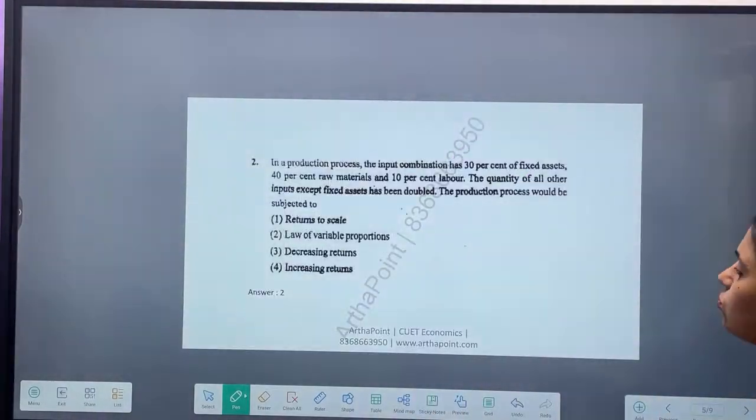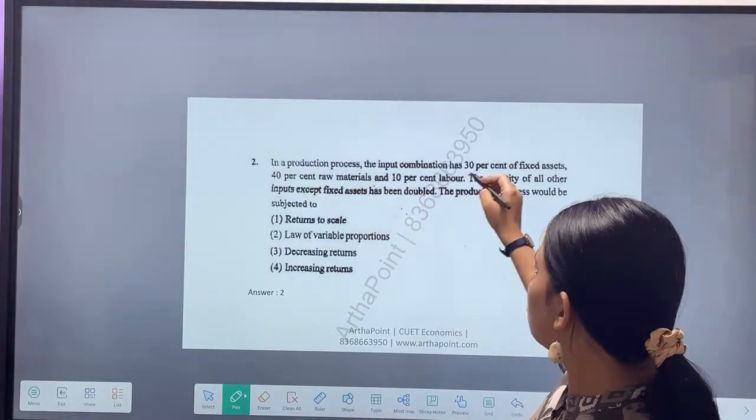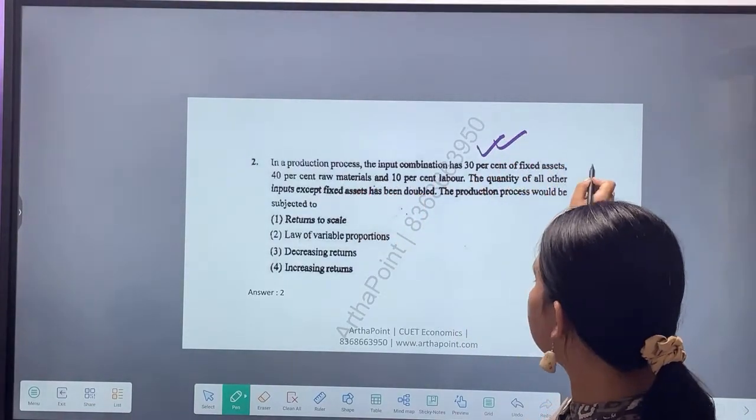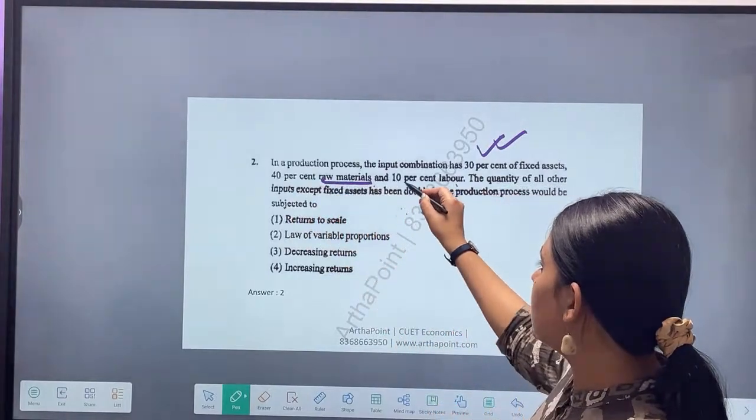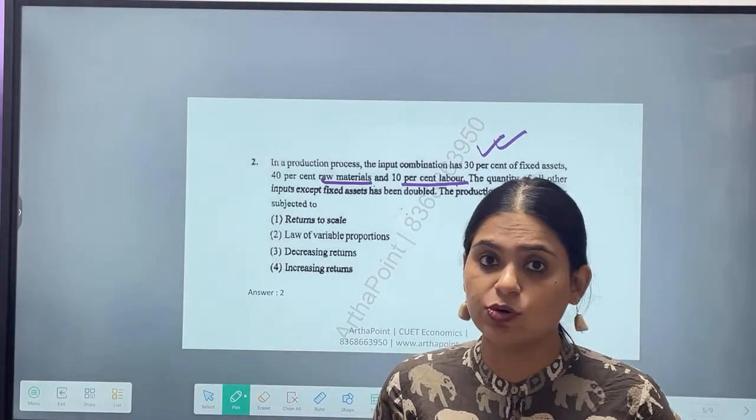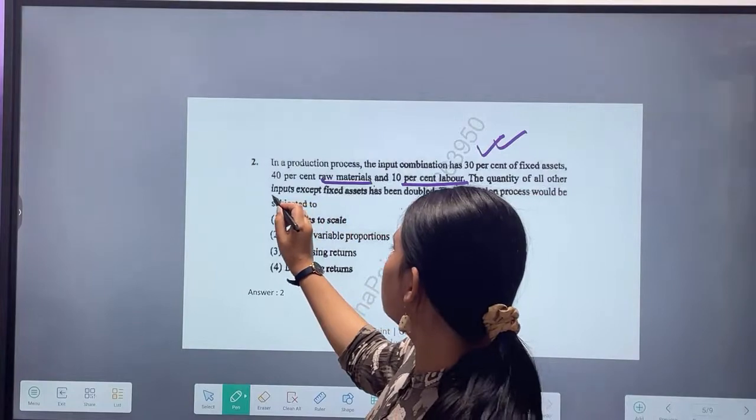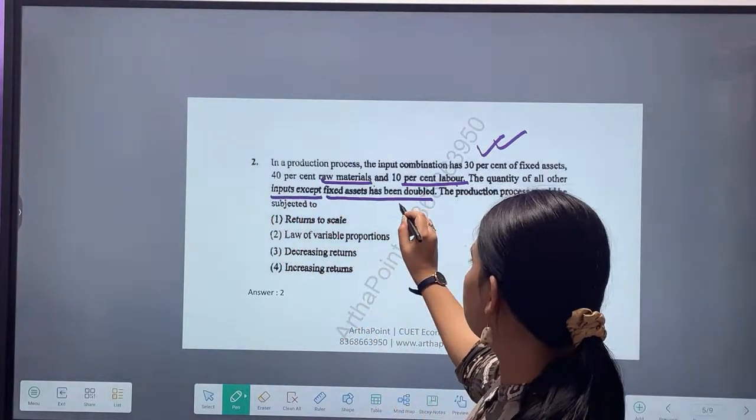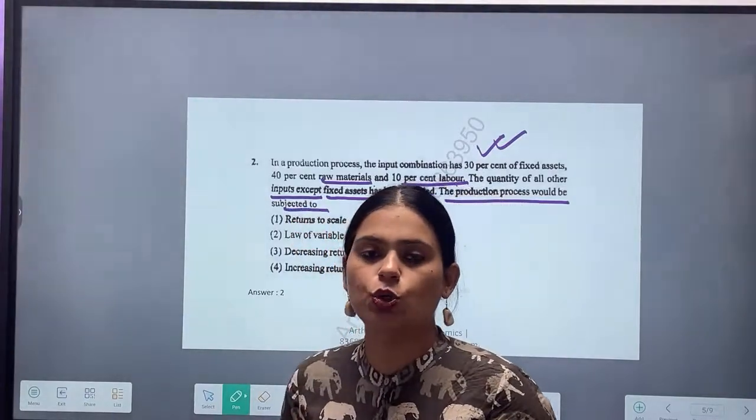Come to the next question. Try to think about this yourself. In the production process, the input combination has 30% fixed asset, 40% raw material, 10% labor. The quantity of all other inputs except the fixed cost has been doubled. The production process would be subjected to what?